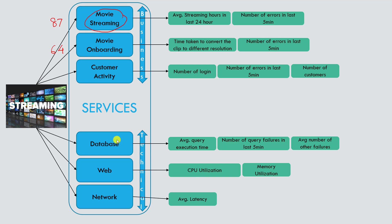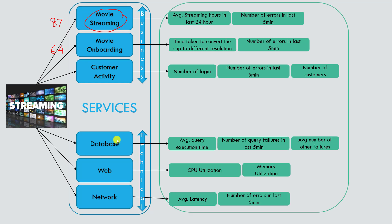For network, KPIs could include latency and errors. There can be many more KPIs depending on your needs and what you want to monitor. Based on that, you define your KPIs, and each KPI has a threshold that determines whether it will show as red, green, or amber.